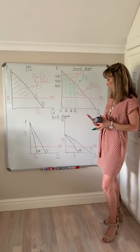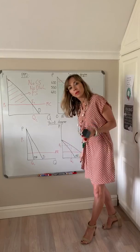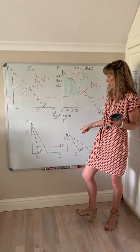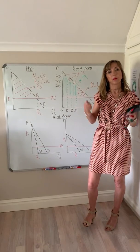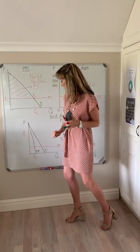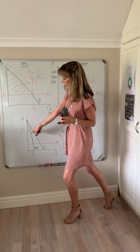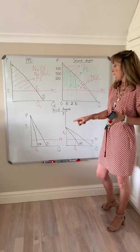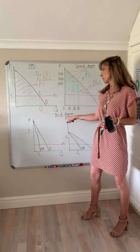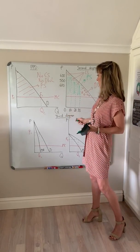Finally, with third degree price discrimination you break the market into two groups and profit maximise in each segment. You find the demand and corresponding marginal revenue for each group and use the profit maximisation rule where MR equals MC to find the profit-maximising price and quantity. As expected, the price is higher for the group with more price inelastic demand compared to the group with more price elastic demand — for instance, students versus other consumers getting movie discounts.